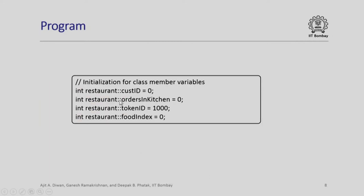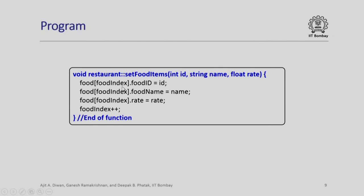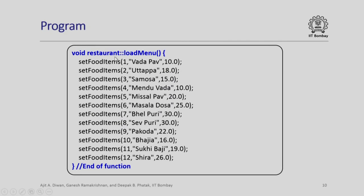At the end of the class, we require some initialization for class member variables. These are all set to 0, except for the token ID base which is set to an arbitrary number 1000 — so all customers will start their token IDs from 1001, 1002, etc. Next, we look at the set_food_items function. This will take an integer ID, a string name, and the rate at which a particular item is sold, and simply assign that ID, name, and rate to the appropriate components of the food_info array element. The load_menu function ordinarily would read data about all items and their rates from a file, but here for simplicity we have assumed 12 items, each set individually by giving the item ID, name, and rate, completing the entire menu for this illustrative example.